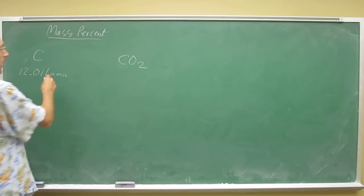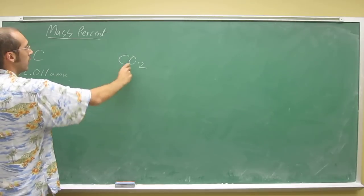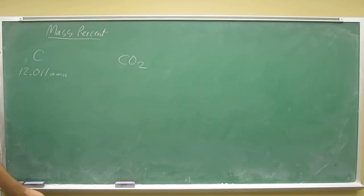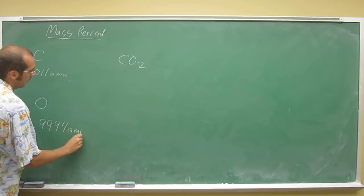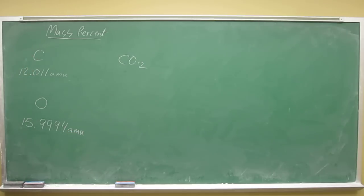You know how much the carbon part weighs, but you don't know how much the oxygen part weighs. So you're going to also have to figure out what's oxygen. The average atomic mass of oxygen in the periodic table I'm using is 15.9994 amu.